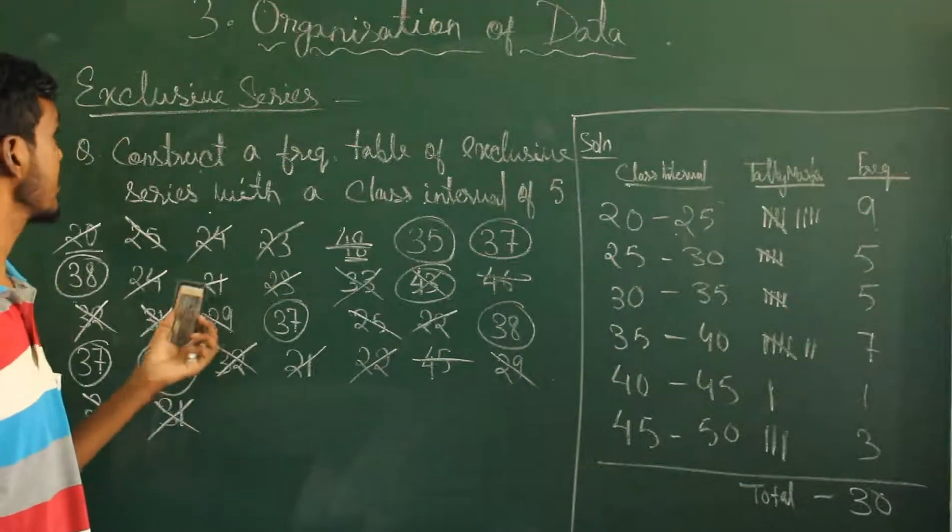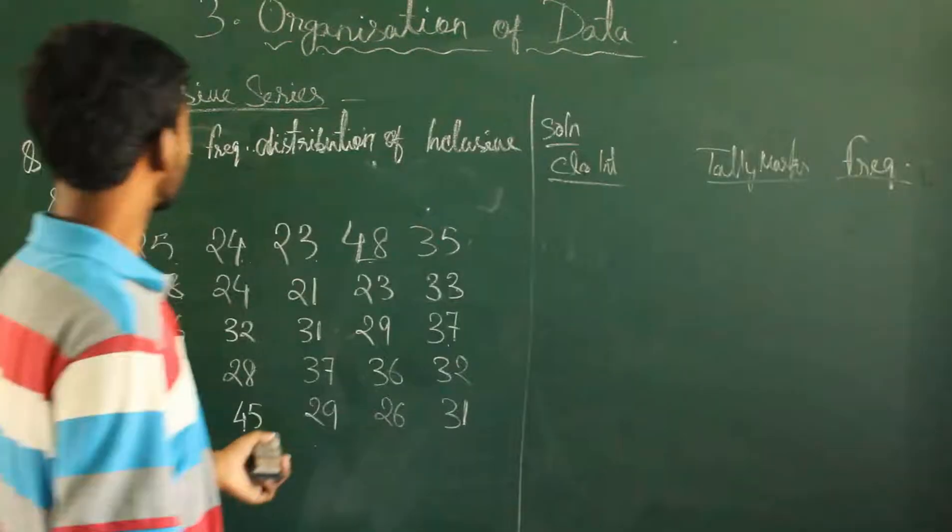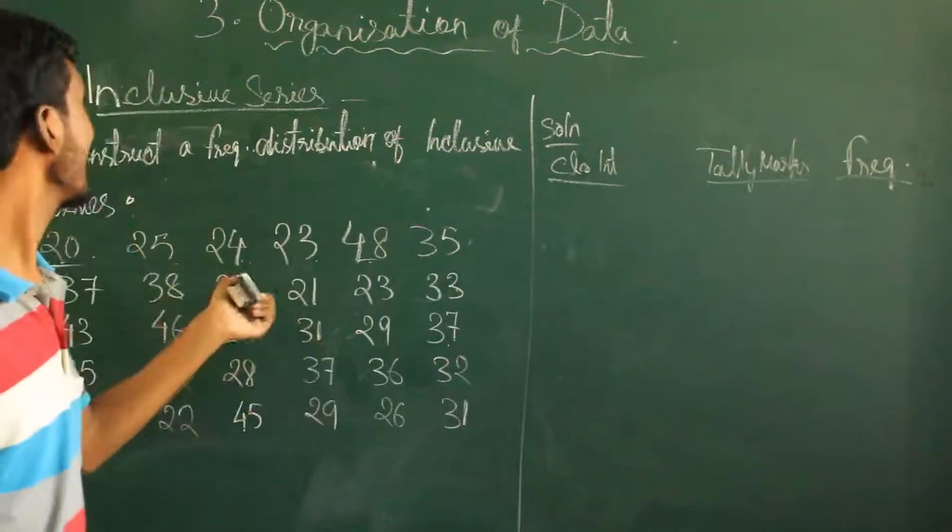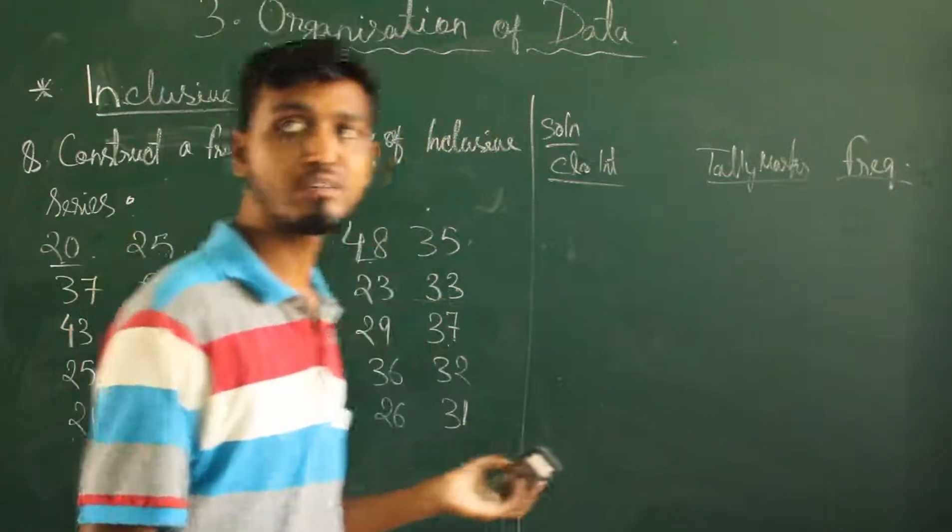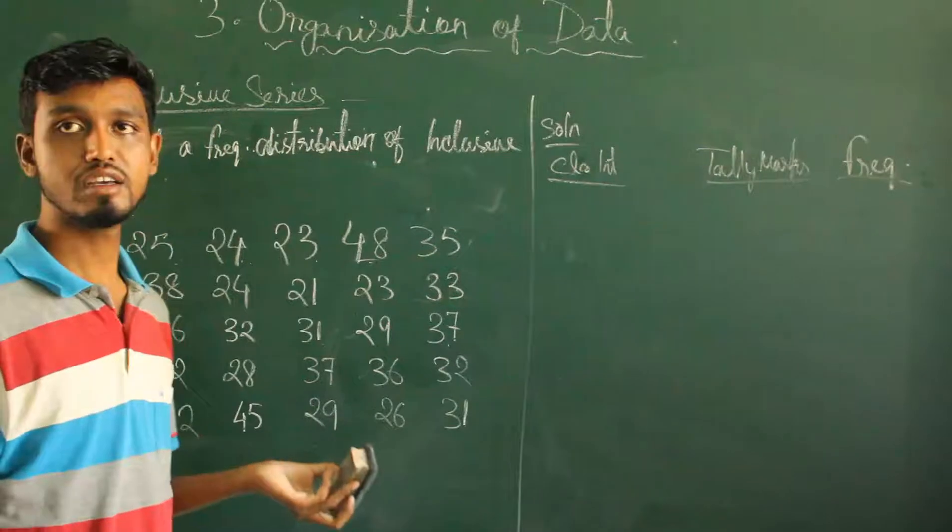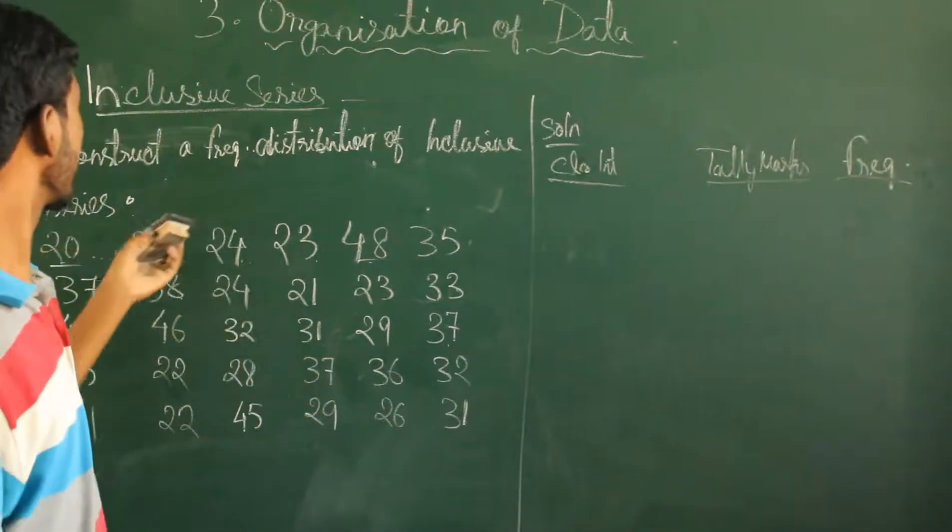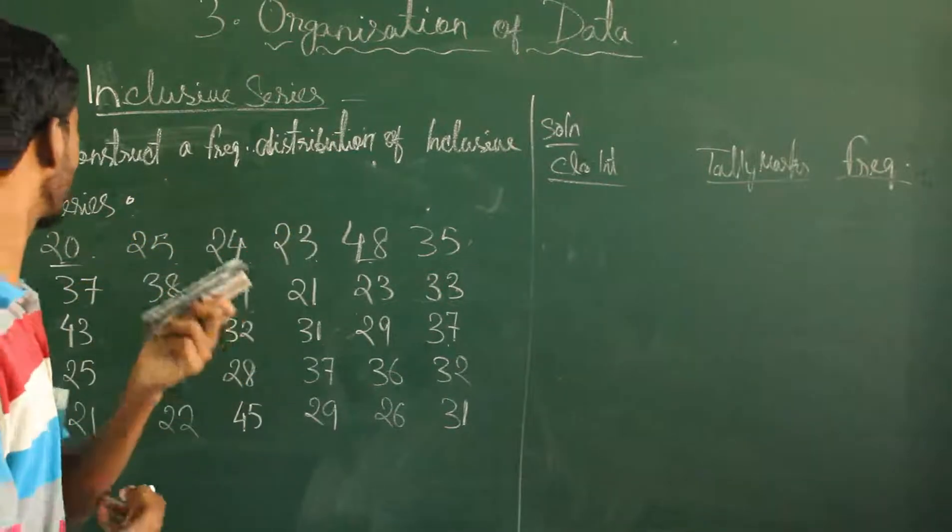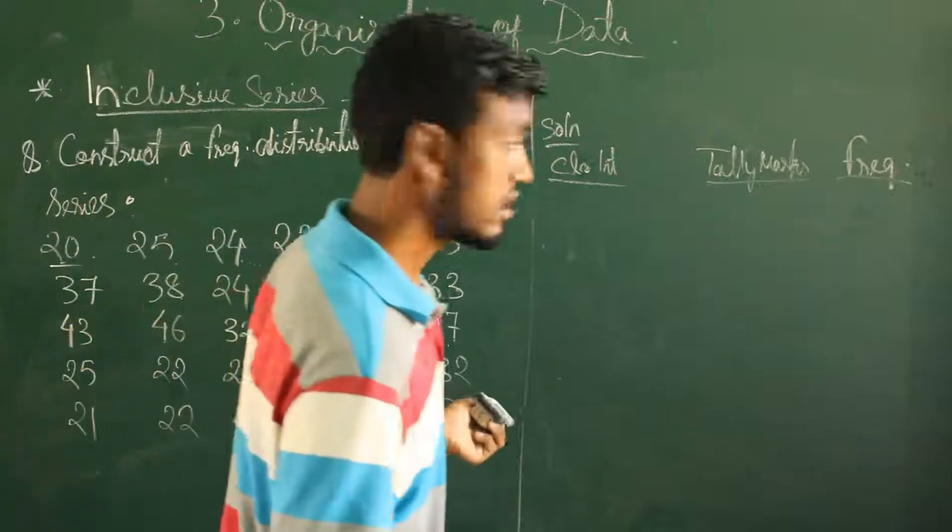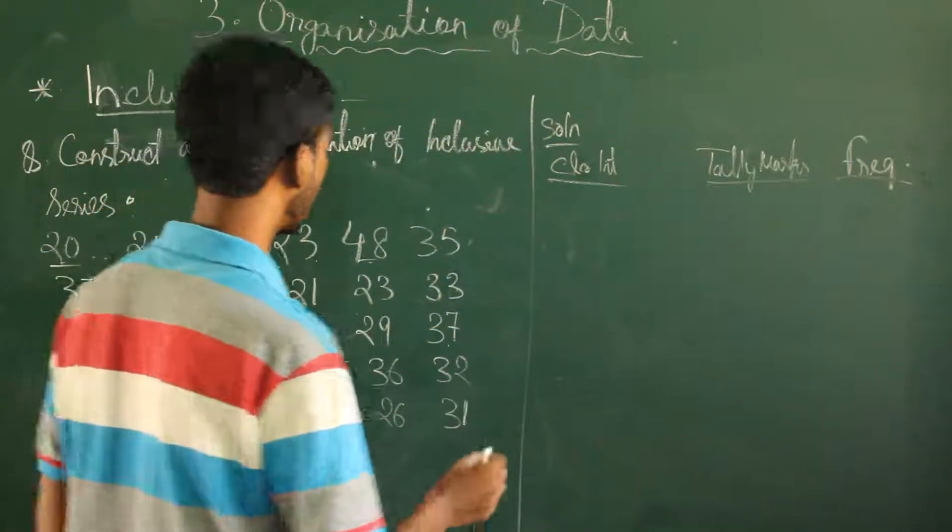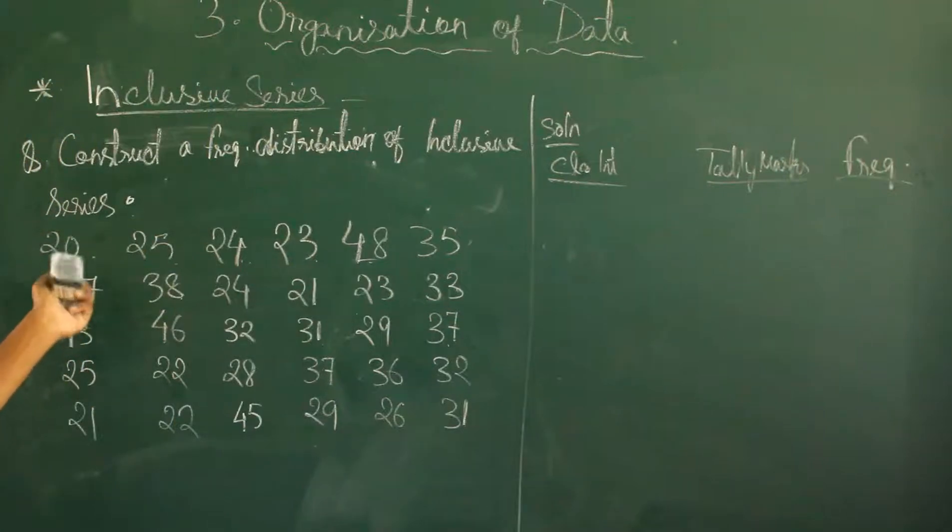Next one we will see the inclusive series. So now we will see the inclusive series. What is inclusive series? In inclusive series, both upper limit and lower limit are included.